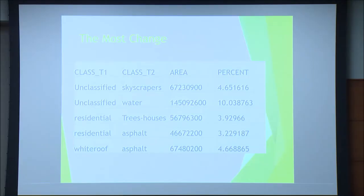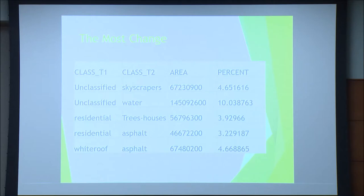What we can see is that the most change from T1 to T2 — 1996 to 2016 — occurred from unclassified to water. Coming in as a tie would be unclassified to skyscrapers. If we take these figures at face value, from a sustainability standpoint there appears to be a shift from white roofs to asphalt — we can see that happening — and over a 20-year span, from an urban heat island effect perspective, that would not be good.